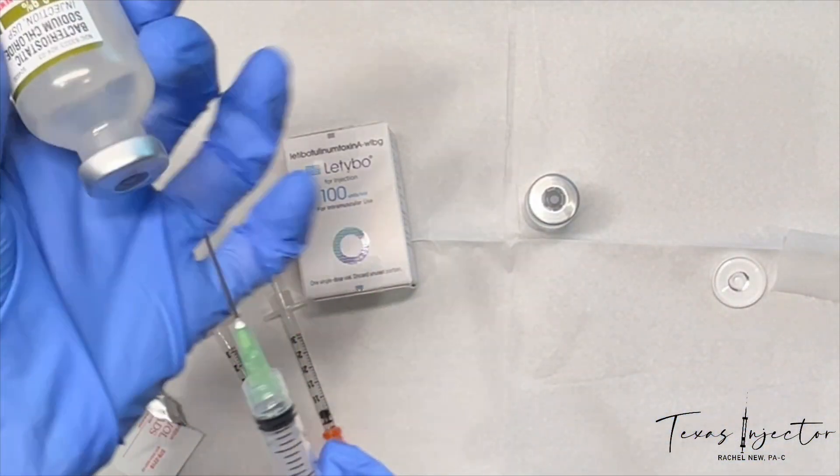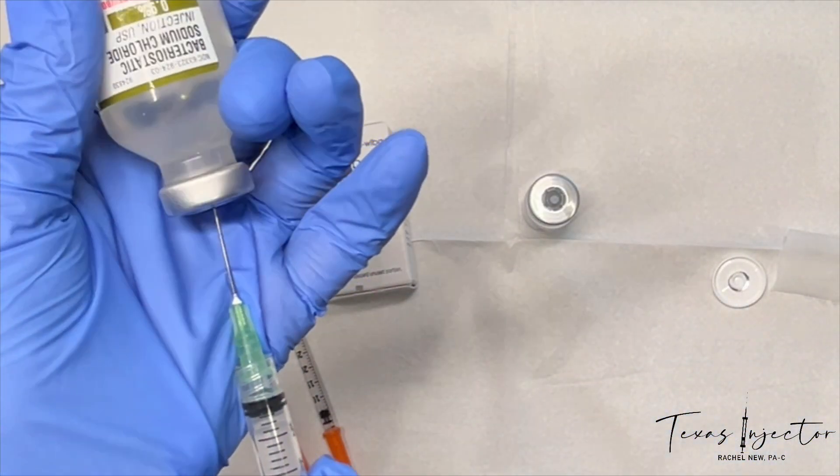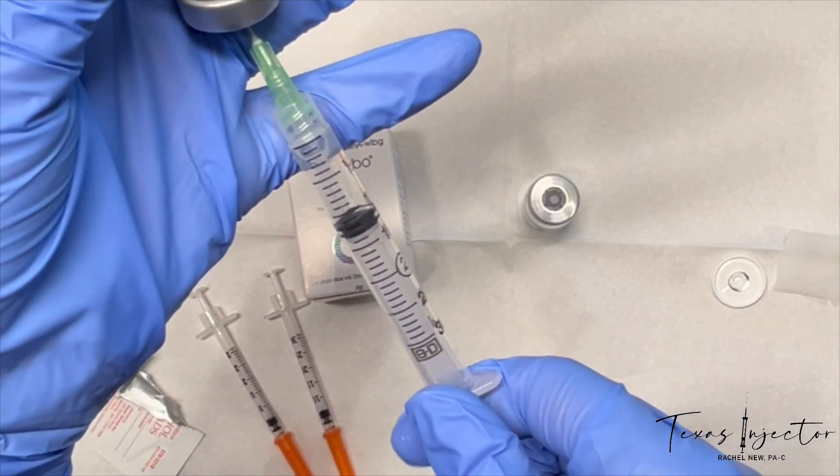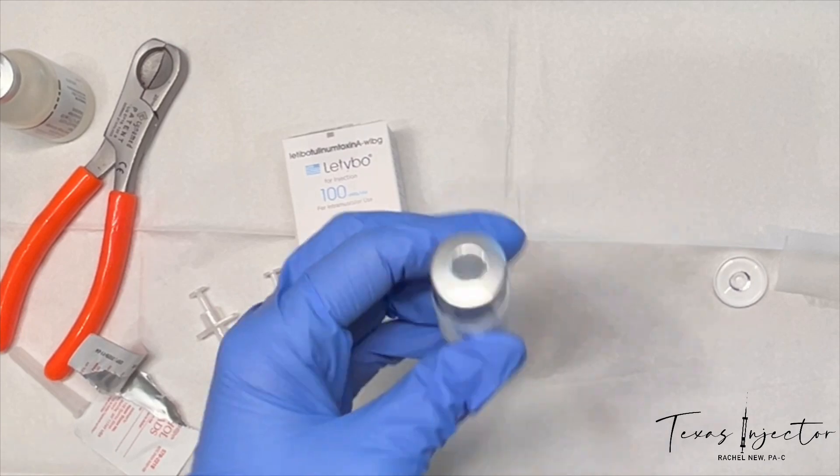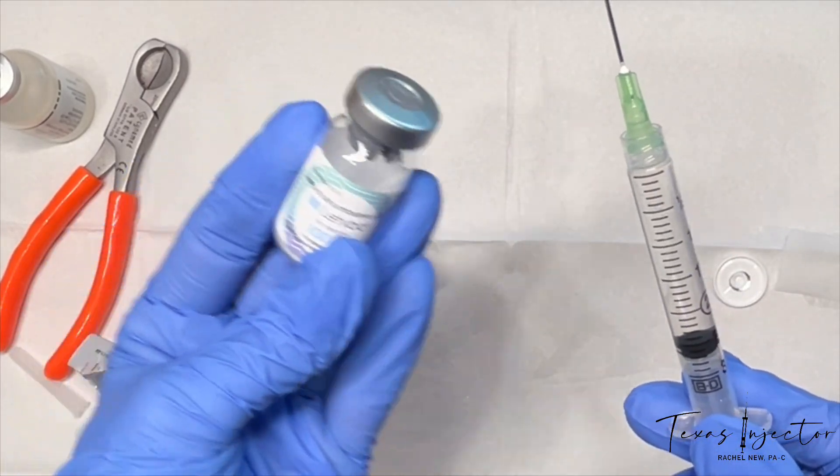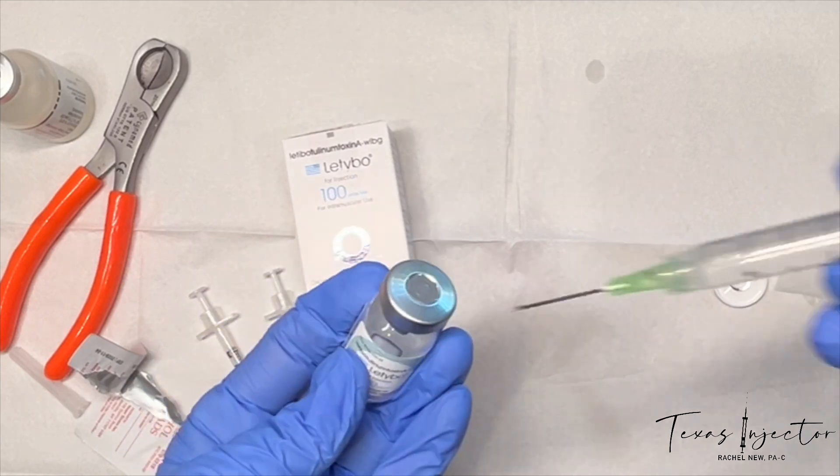We're going to draw 2.5 ml. We're then going to inject the 2.5 ml into the Latibo 100-unit vial.